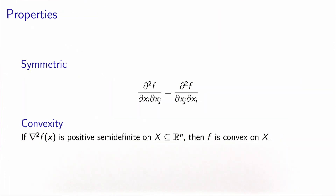An important property of this matrix is that it's symmetric. Indeed, when you calculate the partial second derivative of a function, if you start differentiating with respect to x_i and then with respect to x_j, you will obtain exactly the same result as you do the other way around.